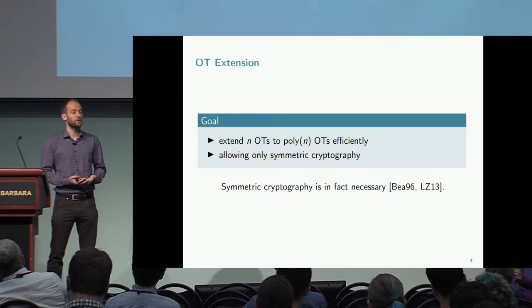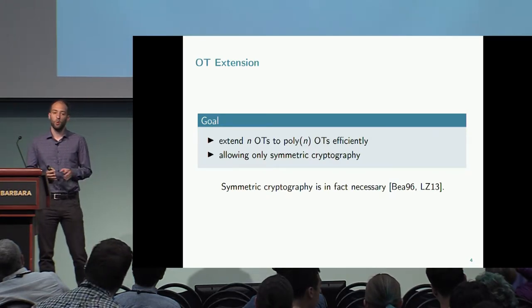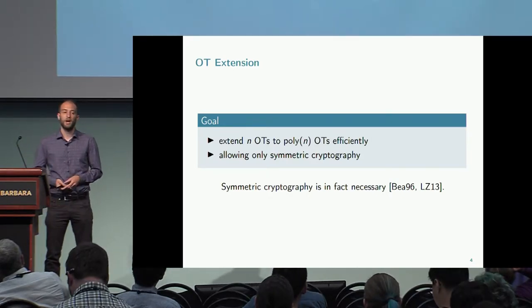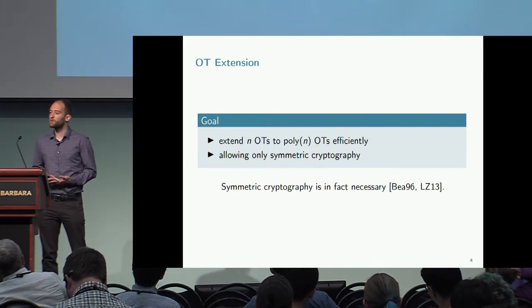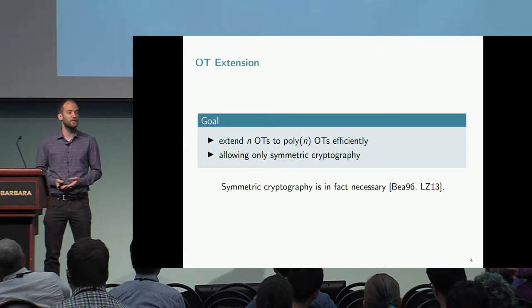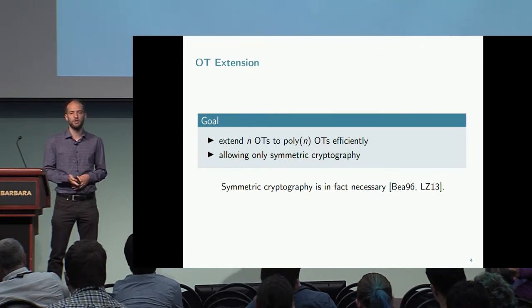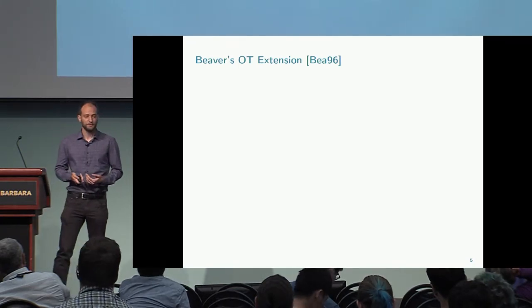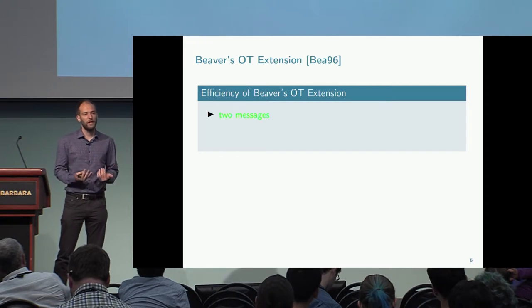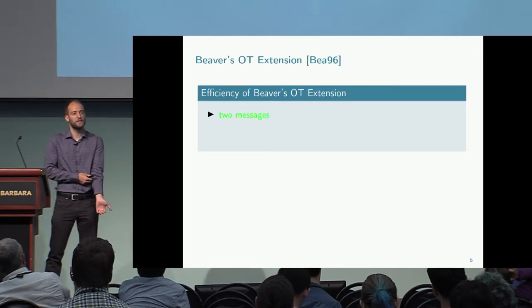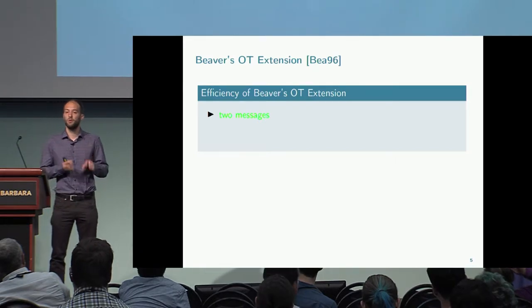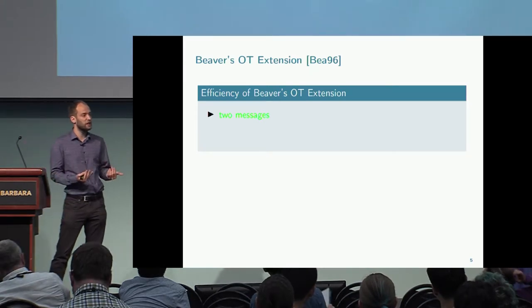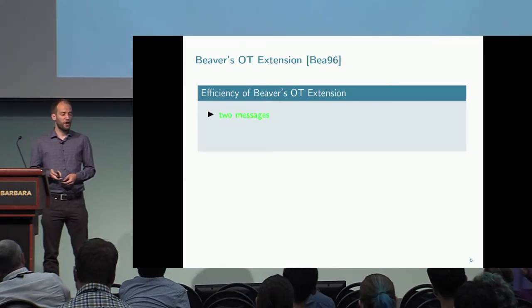There are basically two kinds of constructions for OT extension. One uses a PRG, which can be constructed from one-way functions, and the other uses a special kind of hash function. The first was done by Beaver, and its great merit is that it only uses two messages when starting with a two-message OT — so it does not increase the round complexity, it preserves it.